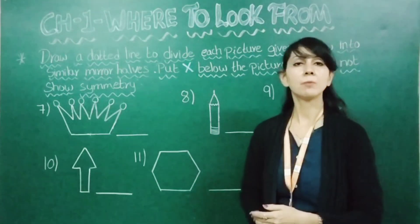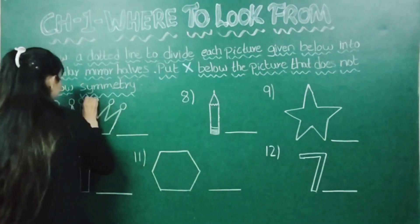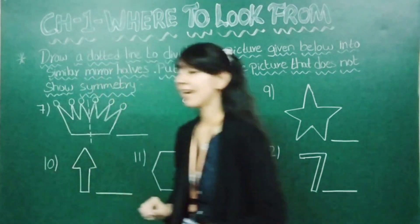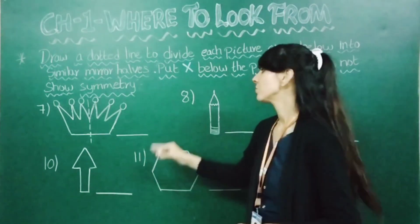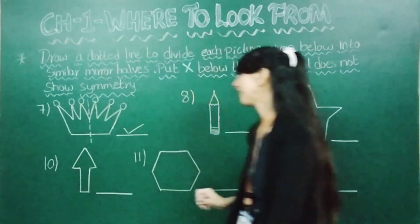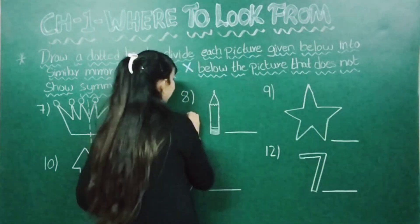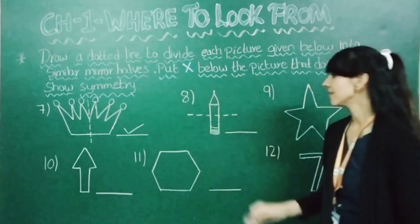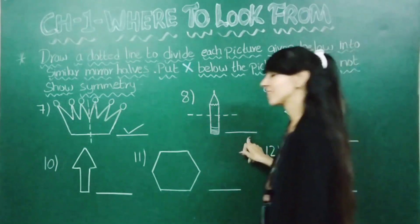Next is a picture of a crown. Drawing the dotted line at the center — do you get a similar mirror half? Yes. So we put a tick here. Moving on, this is a pencil. Drawing the dotted line — do we get a similar mirror half? No. So here we place a cross.